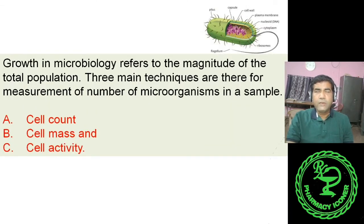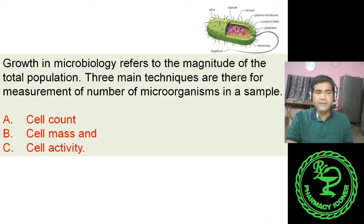Growth in microbiology refers to the magnitude of the total population. Three main techniques are used for this purpose: cell count, cell mass determination, and cell activity determination.